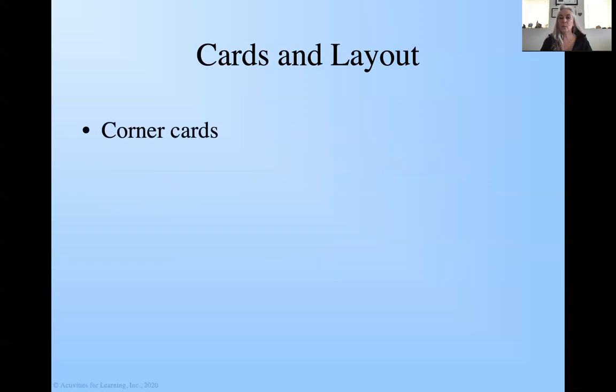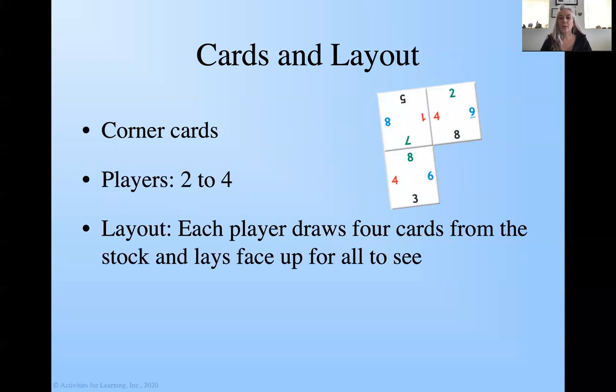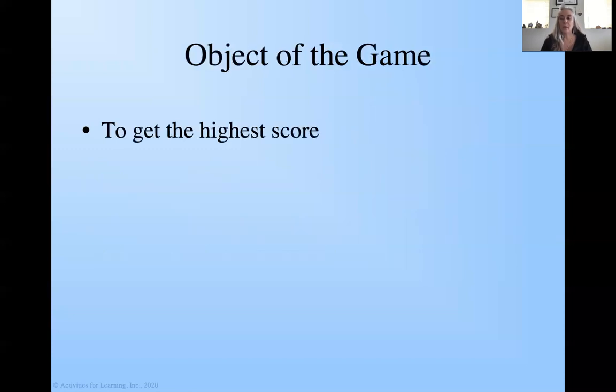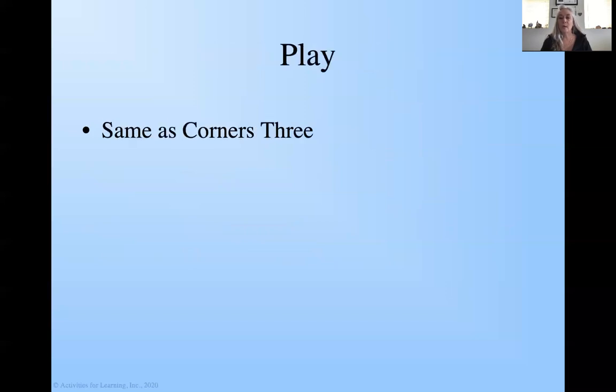For cards and layout, we need the corner cards. Two to four people can play. With the layout, each person draws four cards, just like the regular Corners game, and then they lay them face up for everyone to see. Our object of the game is to get the highest score, just like our regular Corners game. And our play is going to be the same as Corners three.